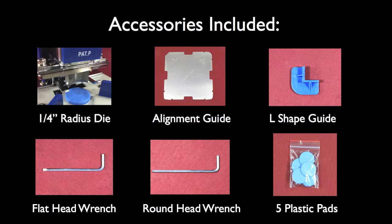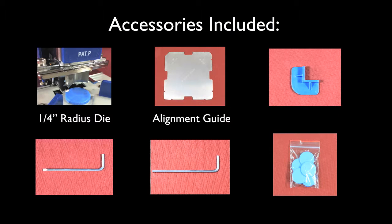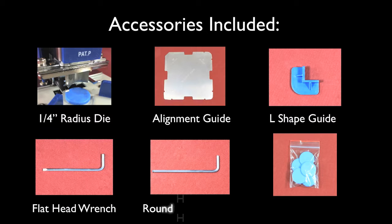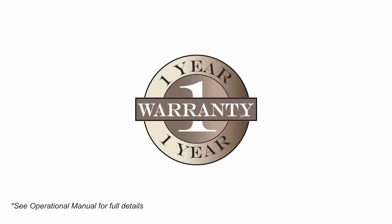Each Diamond 1 comes with a factory installed 1⁄4 inch radius die, an alignment guide, an L-shape guide, a flat head wrench, a round head wrench, and 5 plastic pads. The Achilles Diamond 1 comes with a 1-year warranty in case your machine needs repair we'll take care of parts and labor.